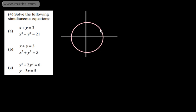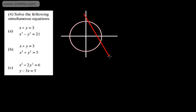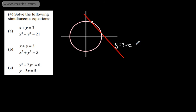This is going to be a circle, center (0, 0), and the radius is root 5. The line is y equals 3 minus x, or equivalently x plus y equals 3. The line intersects the circle at two points. So we have a straight line and the circle x squared plus y squared equals 5. We weren't asked to sketch this, but it adds to the understanding of what's going on.